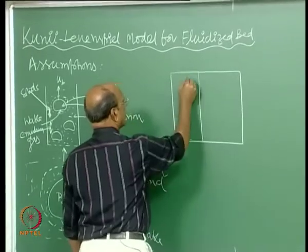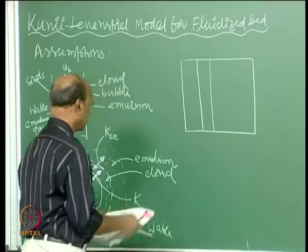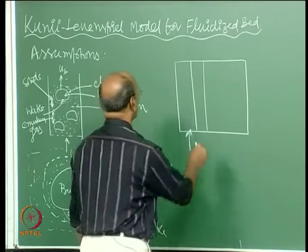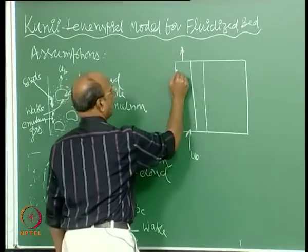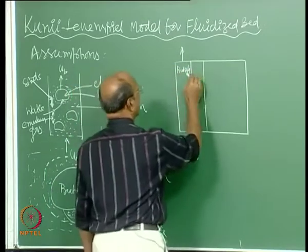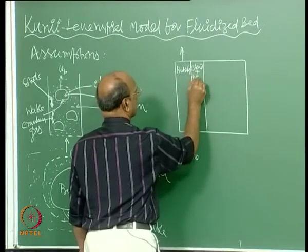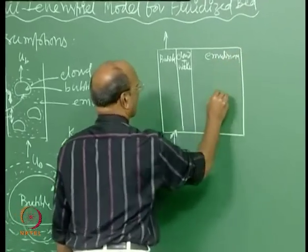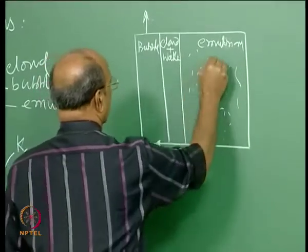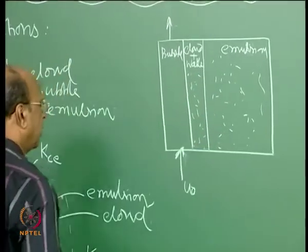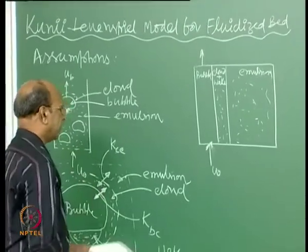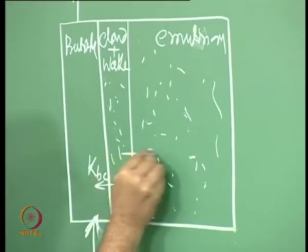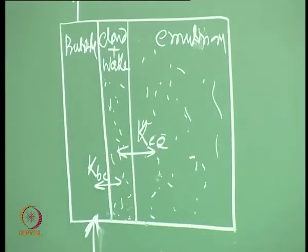For the model, imagine three phases in series: emulsion on the outside, then cloud and wake, then the bubble phase in the center. The imagination is that all the gas tries to go through the bubble phase, but some will also transfer through. Here we have the bubble phase; here we have cloud plus wake; and here we have emulsion with all solids. Inside the bubble there are very few solids only. The transfer K_BC goes from bubble to cloud, and K_CE goes from cloud to emulsion.